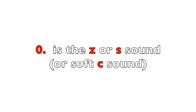Digit 0 is the Z or S sound. Think about how you position your tongue, teeth, and mouth when you say Z or S — they are essentially the same sound. Memory aid: zero is spelled with a Z.